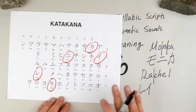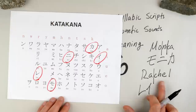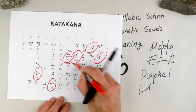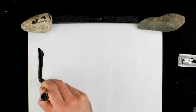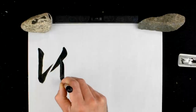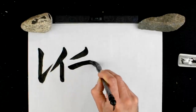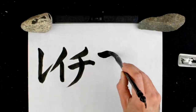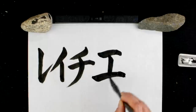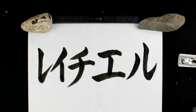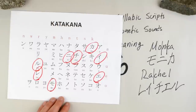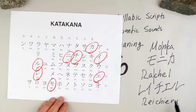Usually a character from the R column is used to represent the L sound, because in Japanese, R's are very soft. Since we can't find a character that sounds like CHE, I'm going to have to make some combinations. First I'm going to use the character for CHI, next the character for E, and then the character for RU to mimic the L sound at the end. So we have REI-CHE-RU. Let's put it all together and we have Reicheru. As you can see, Reicheru doesn't sound exactly like Rachel, but it's close. We can say that Reicheru is the Japanese version of Rachel.